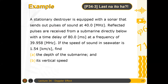A stationary destroyer is equipped with a sonar that sends out pulses of sound at 40 MHz. Reflected pulses are received from a submarine directly below with a time delay of 80 ms at a frequency of 39.958 MHz. If the speed of sound in seawater is 1.54 km per second, find first the depth of the submarine, and second its vertical speed.